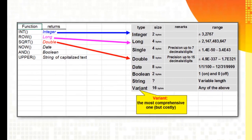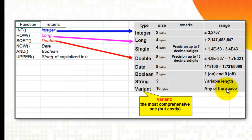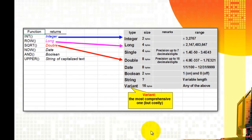All functions return something. The function INT in Excel returns an integer. Some functions return a long or a double. I have explained here what the size of the memory space is that they use, and I want you to know there is one special one called variant. A variant uses much more memory space than the others, but the advantage is that it can hold anything — not just a single number, a single word, or a single date, but also multiple values. And that is great for what we are going to use later on.